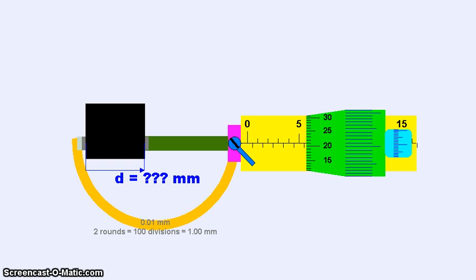You'll notice that on the micrometer screw gauge there are two scales. The first scale is the one that is yellow and the other scale is the one that is green.